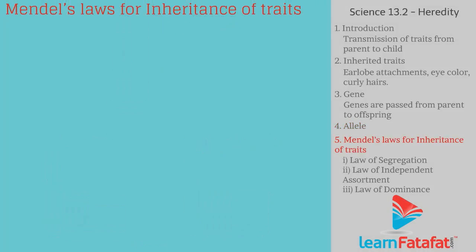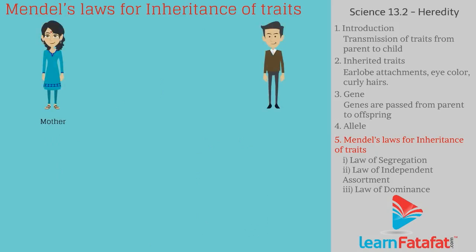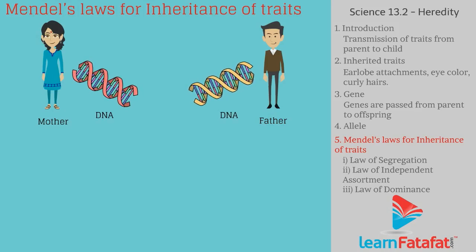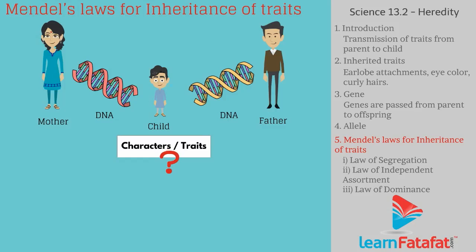Mendel formulated Laws for Inheritance of Traits based on the fact that both parents — mother and father — contribute equal quantities of genetic material, i.e., DNA to the child. This raises the question: if both parents contribute equal quantities of DNA, then which characters would show up in the child?